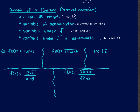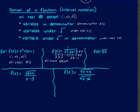For f(x) equals x squared plus 3x plus 1, none of the restricting cases apply, so this is all real numbers — negative infinity to positive infinity. For f(x) equals 1 over (x squared minus 2x minus 3), there's a variable in the denominator. Set it not equal to 0: it factors as (x minus 3)(x plus 1), so x cannot equal 3 or negative 1. In interval notation: negative infinity to negative 1, then negative 1 to 3, then 3 to positive infinity.